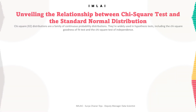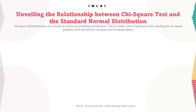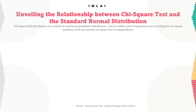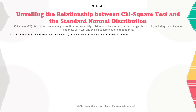Chi-square distributions are useful for hypothesis testing because of their close relationship to the standard normal distribution. The standard normal distribution — a normal distribution with mean 0 and variance 1 — is central to many important statistical tests and theories. Imagine taking a random sample from a standard normal distribution Z. If you squared all of the values in the sample, you would have the chi-square distribution with k equals 1.